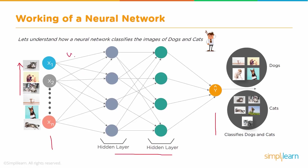In the training process, weights and biases keep changing every iteration, known as an epoch. Each time the weights are updated to maximize the number of images classified correctly. For example, with 1000 labeled images of cats and dogs, in the first run only 500 may be correctly classified — 50% accuracy. We feed that information back to the network, update the weights and biases, and run the inputs again. In the second iteration, maybe 700 of 1000 are predicted correctly — 70% accuracy. This iterative process continues until accuracy reaches perhaps 90–95%.